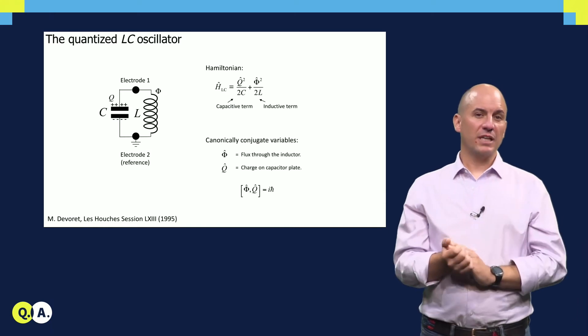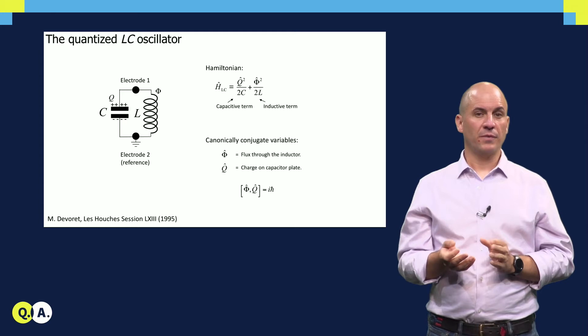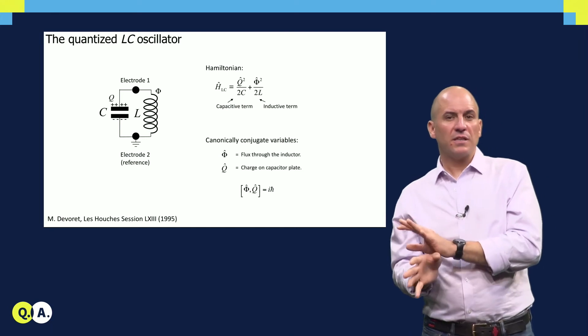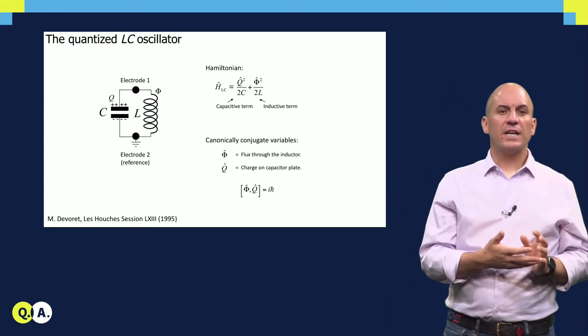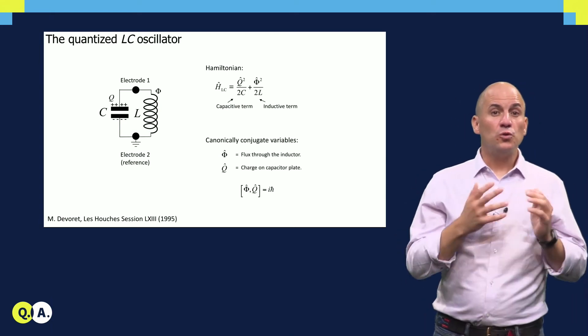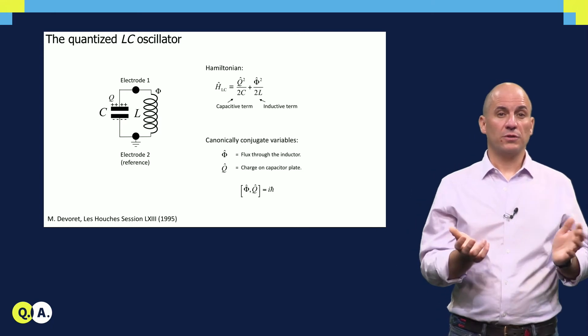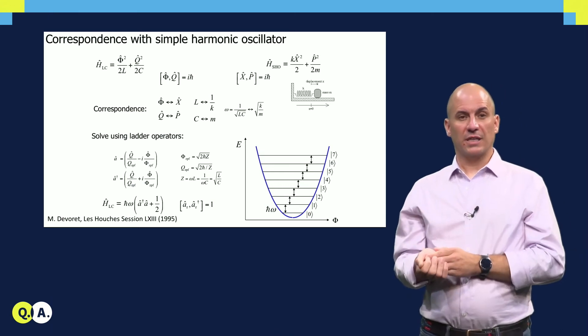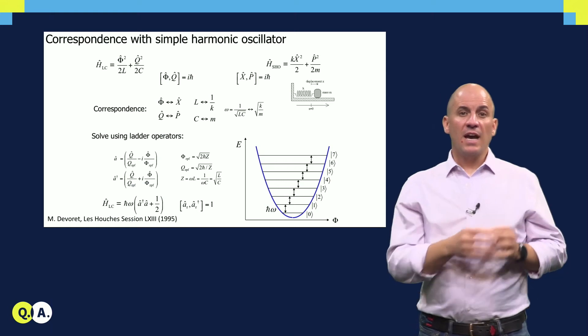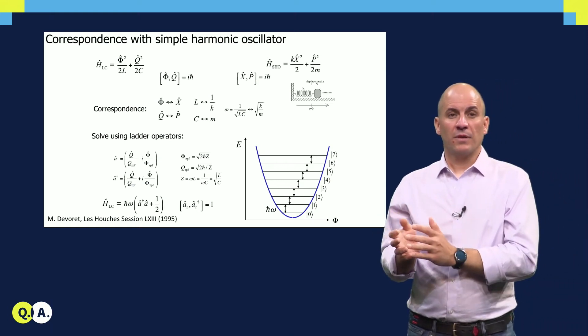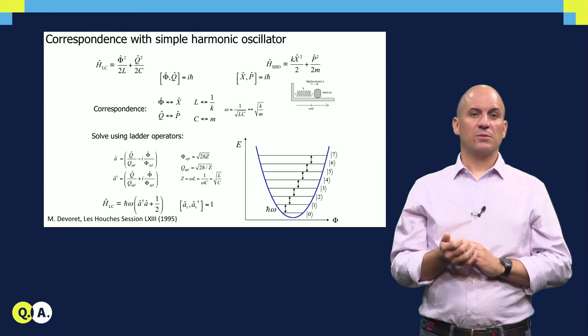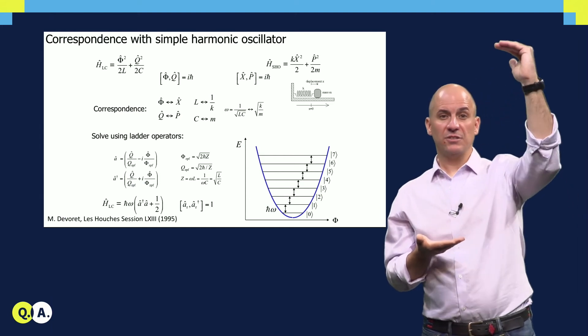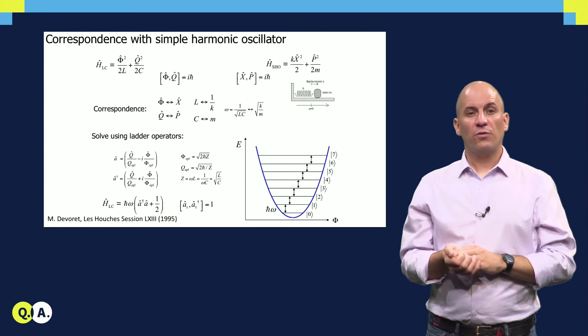The Hamiltonian for the LC oscillator consists of two terms that are each quadratic with respect to one variable. The capacitive term is quadratic on the charge accumulated on one island. The opposite charge is accumulated in the other. The inductive term is quadratic on the flux through the inductor. This charge and this flux do not commute. In fact, they are canonically conjugate variables. A direct correspondence between this Hamiltonian can be made to that of the simple harmonic oscillator by mapping flux to the position of the mass and charge to the mass's momentum. Physics students will thus not be surprised to learn that the spectrum of the quantized LC oscillator is perfectly harmonic. Levels are equally spaced in energy. This equal spacing is given by a familiar formula, one over root LC.